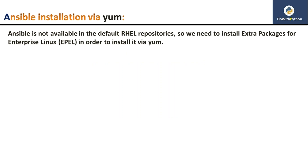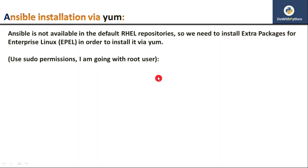As of now, Ansible is not available in the default RHEL repositories, so we need to install Extra Packages for Enterprise Linux (EPEL) in order to install via YUM. Generally, YUM installs required packages from repositories, but since there is no Ansible in the default repositories, you need to add extra packages. Also, you need sudo permissions or must be a root user. Here I am going with the root user.